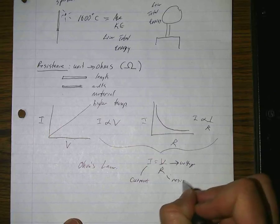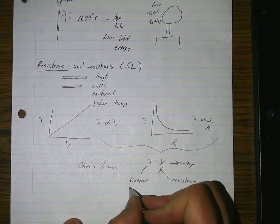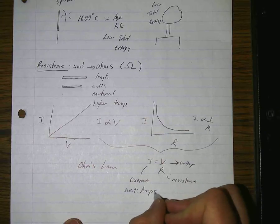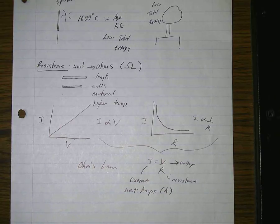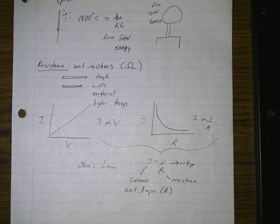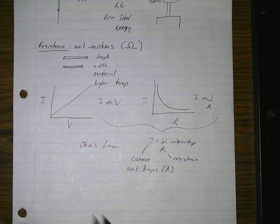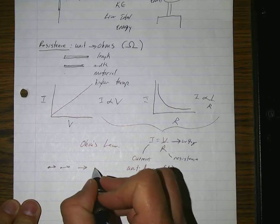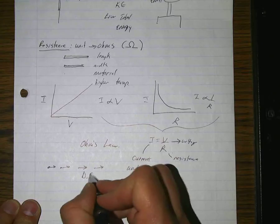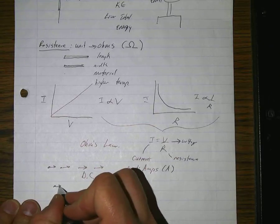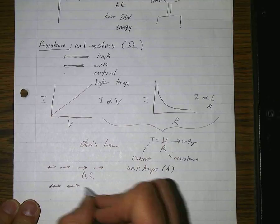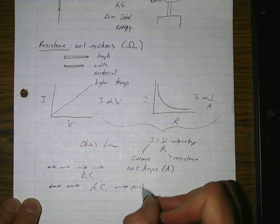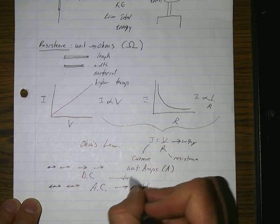We've talked about units for all of them except for current. The unit for current was the ampere, which we usually call amps, and capital A is the abbreviation. There are two different ways for current to move: charges can keep moving in the same direction slowly — we call that direct current, or DC — or a charge could just keep changing direction the whole time, and that would be alternating current, which we call AC. AC is what we use in outlets in buildings and houses; DC is what you get in batteries.